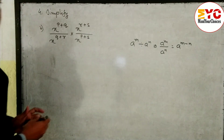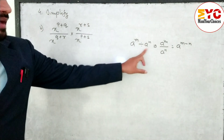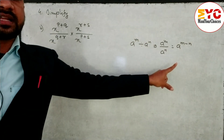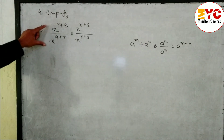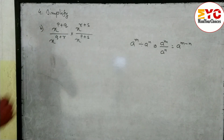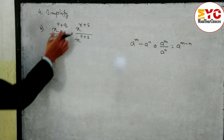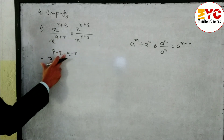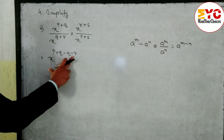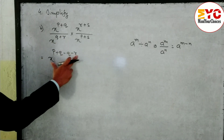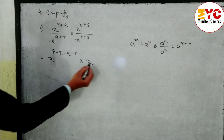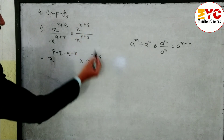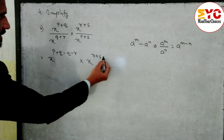When base is the same and in divide, we subtract the power — whether in this form or that form, it is division only. So we write x power (p+q), then minus q and minus r — if positive we write negative. Second part: x power (r+s), then minus p and minus s — both positive so we write both negative.